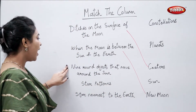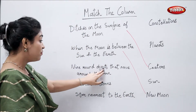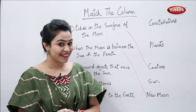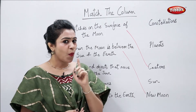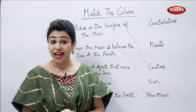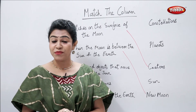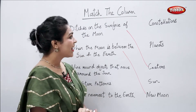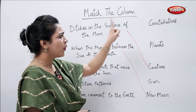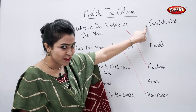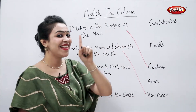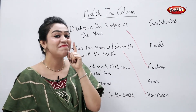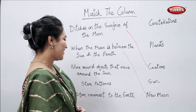Nine round objects that move around the sun — what are those nine moving objects called? They are called constellations. No, they are called planets.